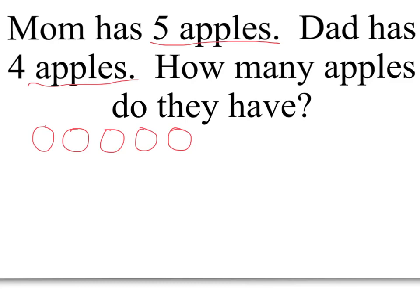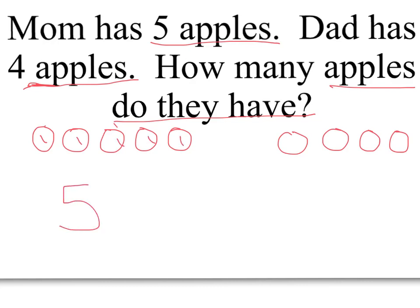And Dad has four apples — one, two, three, four. How many apples do they have? We want to know how many they have together. Let's count Mom's five — one, two, three, four, five. Here's five. Plus, remember Dad had one, two, three, four apples, equals. Remember to put that equals sign.